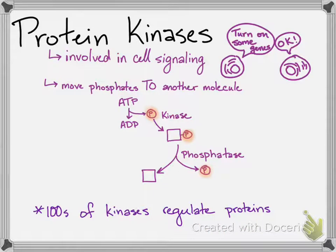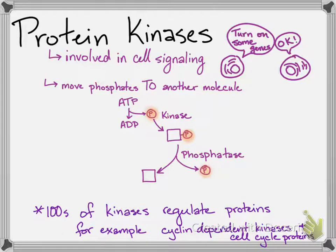We know of hundreds of kinases that probably regulate thousands of proteins. The cyclin-dependent kinases and other related kinases are closely involved in cell cycle regulation, and abnormal kinase behavior — for example, always being turned on or off — is linked to cancer.